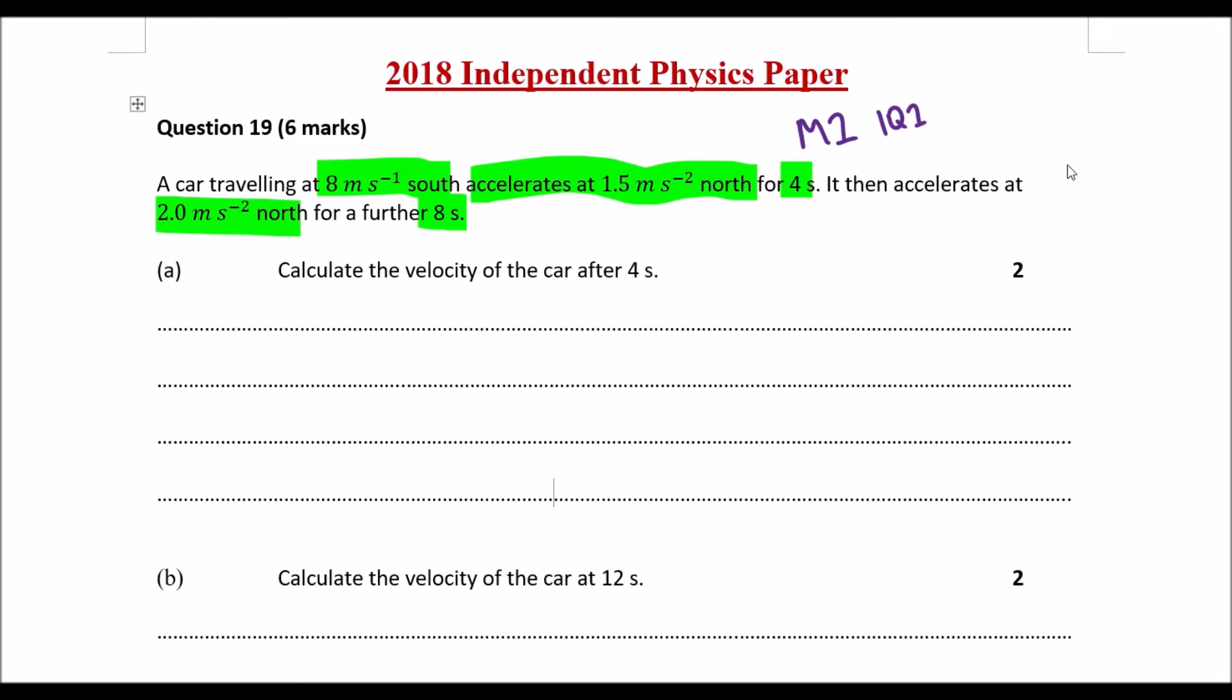To start the question, I'm going to say going north is going to be my positive direction. So we want to calculate the velocity of the car after 4 seconds. This velocity is asking us to calculate the final velocity.